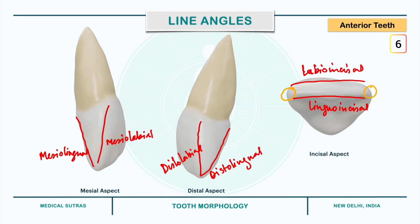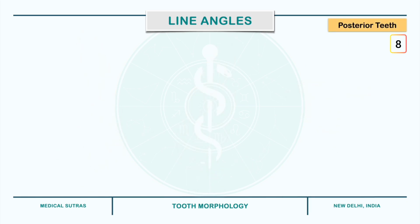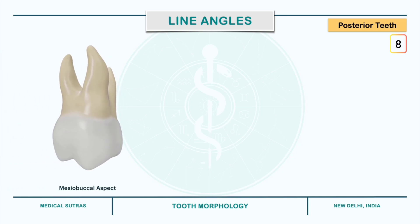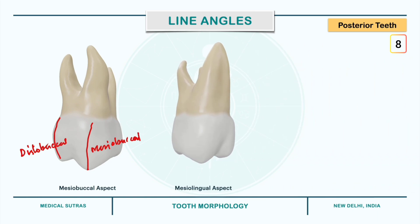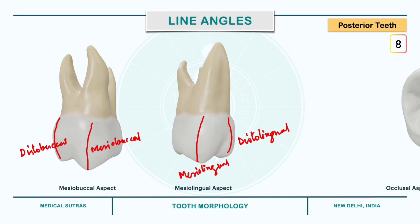Posterior teeth have eight line angles, and to describe them we will consider the upper first molar. From the mesiobuccal aspect we can see the mesiobuccal and distobuccal line angles. The remaining four line angles can be visualized from the occlusal aspect.